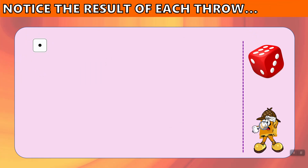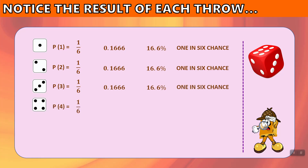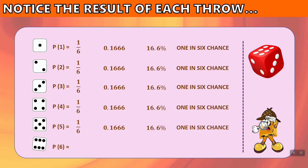Looking at the faces of the die one by one: to roll a 1, there is a 1 in 6 chance. Rolling a 2 — there's only one 2 on the die, so the probability is also 1 over 6. Rolling a 3: 1 out of 6. The probability of rolling a 4 is 1 out of 6. Rolling a 5: 1 out of 6. Rolling a 6: 1 out of 6. The chance of getting any number on a die is the same — 1 in 6.